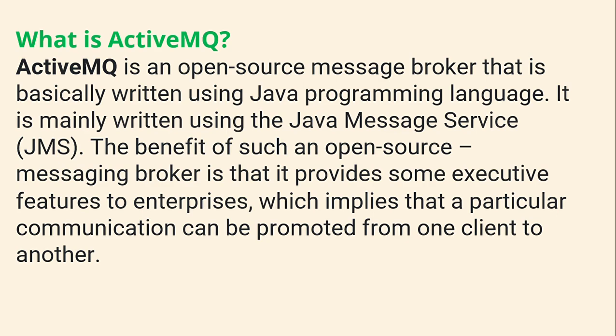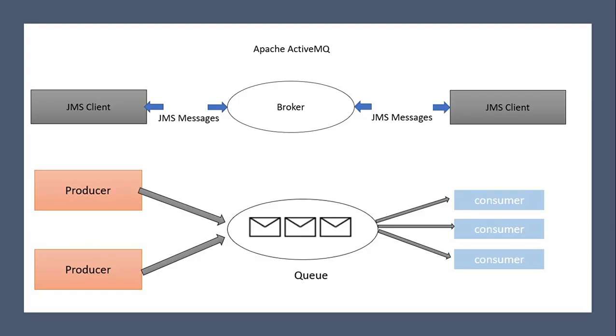The first question you can expect is: what is ActiveMQ? ActiveMQ is an open source message broker written using the Java programming language, mainly based on the Java Messaging Service (JMS). It provides security features to enterprises, enabling communication to be promoted from one client to another. Typically, JMS clients talk to each other through the ActiveMQ broker, with a producer on one side and a consumer on the other, with messages sent in queues.